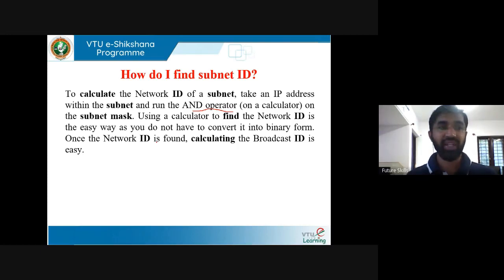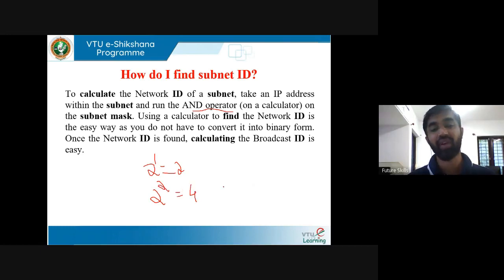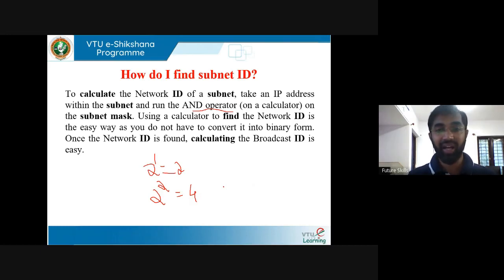If the address is from Class C, use the default subnet mask. If you choose one bit from the host ID part, 2 to the power of 1 gives 2 subnets. If you choose two bits from the host part, 2 to the power of 2 gives 4 subnets. To find the subnet ID, perform binary AND between the IP address and the subnet mask.